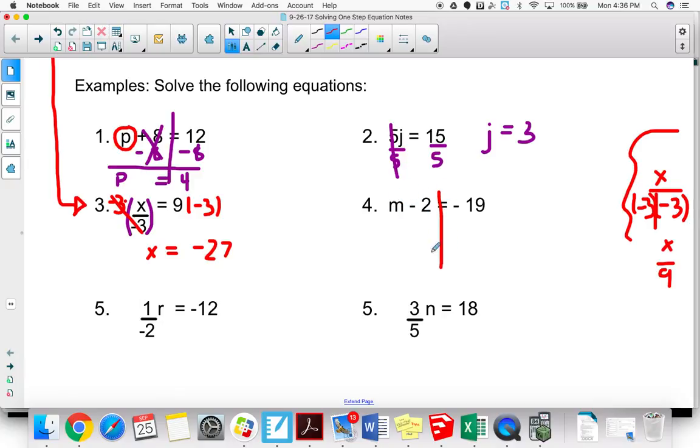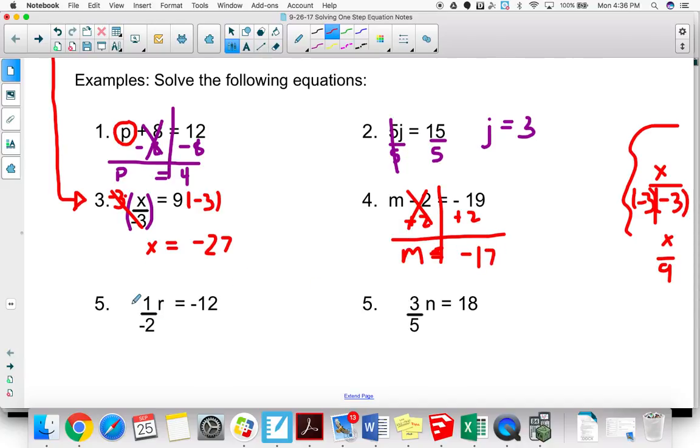Again, kind of focusing on both sides of the equation here. If M has been subtracted by 2, I'm going to do the inverse, which is add 2. So that means the 2s cancel out here. And M is equal to a -19 plus 2 is still negative. It's just going to be a little less negative, so -17.